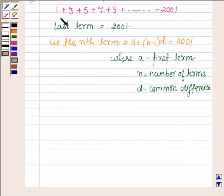Now, on observing this series, we find that here the first term a is equal to 1, common difference d is equal to 2, and we have to find n.